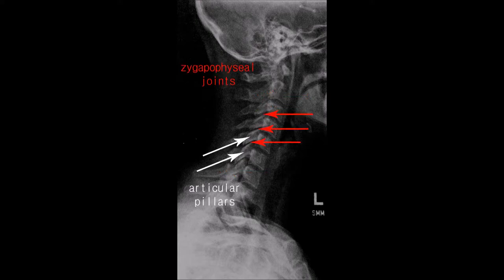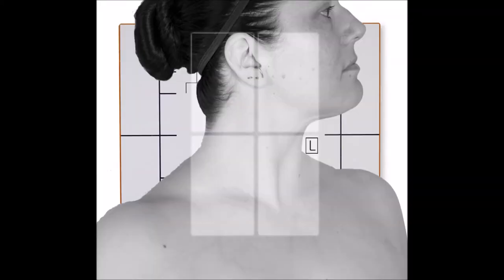For obliques, RAO and LAO are preferred because it reduces thyroid doses. But for demonstrative purposes, I show one of each, an LPO and an RAO to include the differences between the two views.